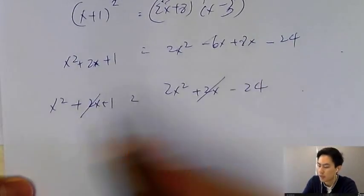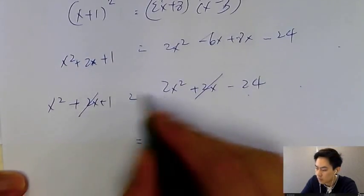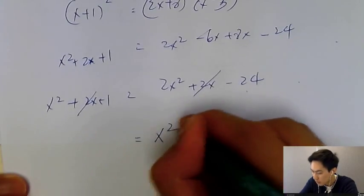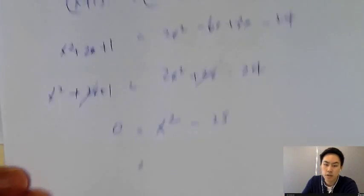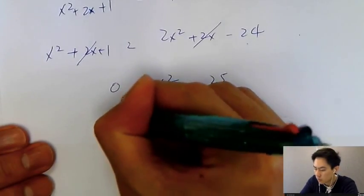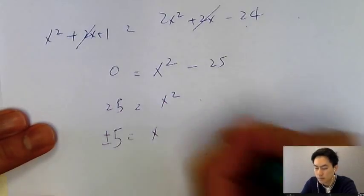This one is x squared plus two x plus one. Two x cancels out, and you move all the things to the right hand side. Two x squared minus x squared is just x squared. Twenty four minus one is minus twenty five. So x squared equals twenty five, and x equals plus or minus five.